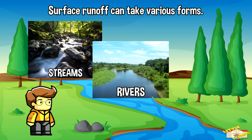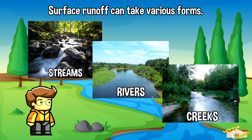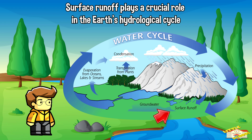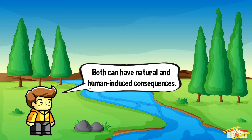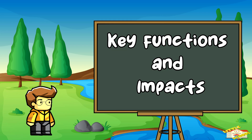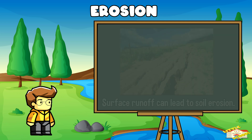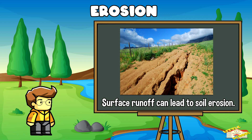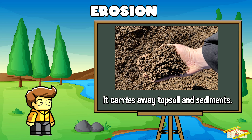Surface runoff can take various forms, such as flowing in streams, rivers, and creeks. Surface runoff plays a crucial role in the Earth's hydrological cycle, with both natural and human-induced consequences. One key impact is erosion — surface runoff can lead to soil erosion by carrying away topsoil and sediments, which can be detrimental to agriculture.